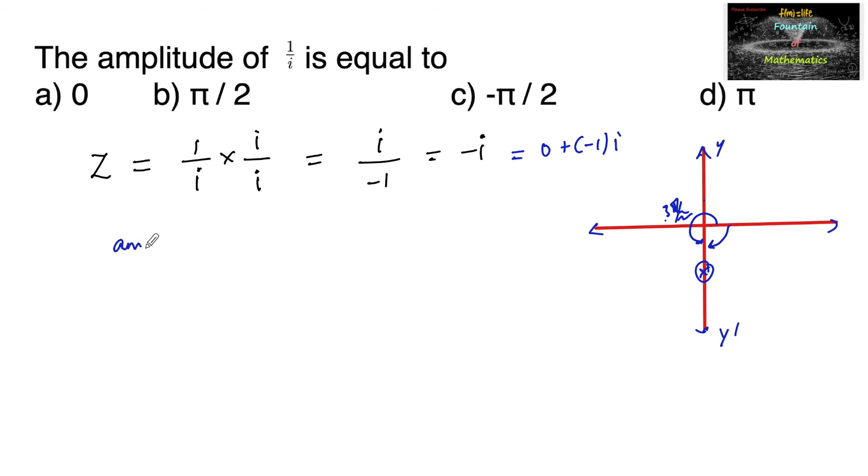The amplitude of z, which is 1 upon i, is equal to either 3 pi by 2 or we can consider minus pi by 2. Among the options, minus pi by 2 is given, so we can go with minus pi by 2. Our principal amplitude also can be taken as minus pi by 2.